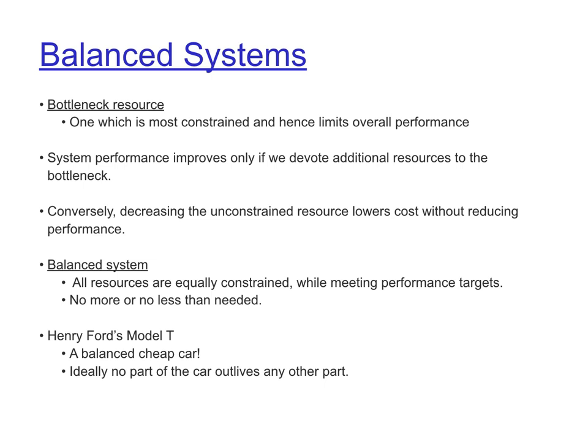The other option is to balance the system by using unconstrained resources to reduce the use of the bottleneck resource. For example, you might use compression to reduce the amount of data sent over a limited Wi-Fi link, or slow down your application so it burns less power and the battery lasts longer. In an ideally balanced system, all resources are equally constrained while you are still meeting your performance target — meaning you use no more resources than necessary and no less than needed.